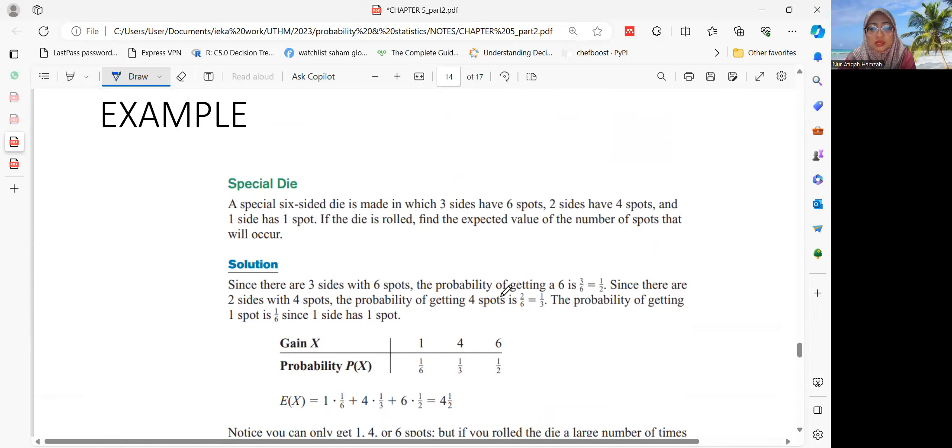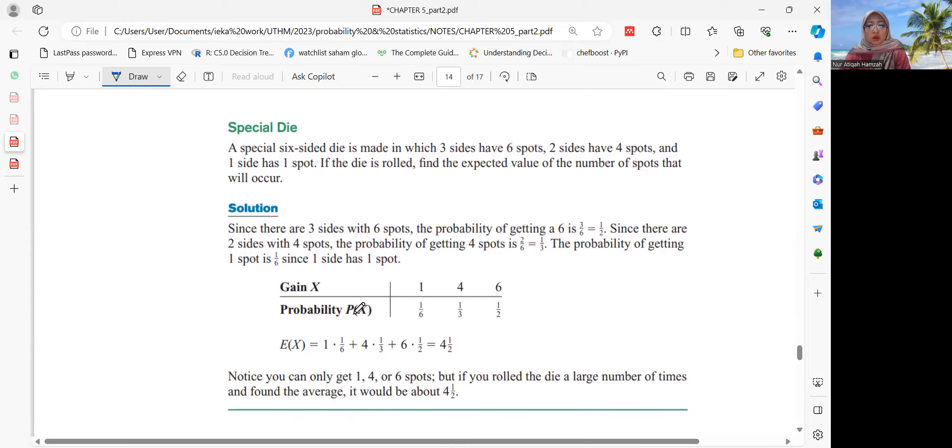A special six-sided die is made where three sides have six spots, two sides have four spots, and one side has one spot. It has six surfaces but the numbers on it are only six, four, and one, the dots. If the die is rolled, find the expected value of the number of spots that will occur. This is how you find the probability. We know we have six, four, and one. This is our value of x.